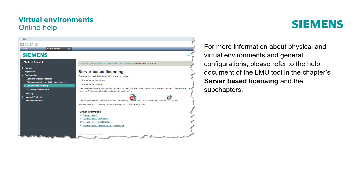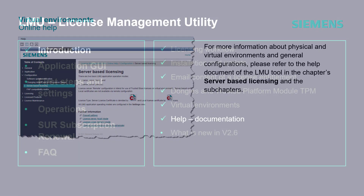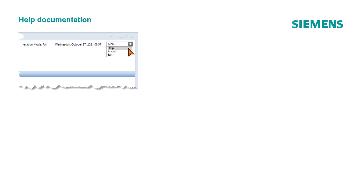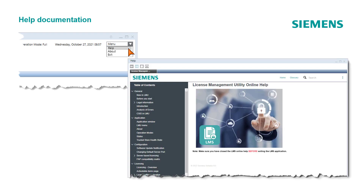For more information about physical and virtual environments, firewall settings, and general configurations, please refer to the help document of the LMU tool in the chapters on Server Based Licensing and its subchapters. The LMU tool also offers help documentation. In this learning session we cannot show all workflows and features — that would go too far. The help documentation is available in the LMU tool in the menu. For further and detailed information, please refer to the help of the LMU.